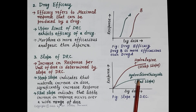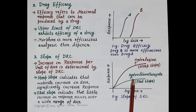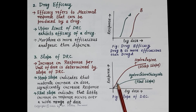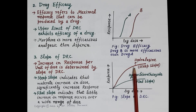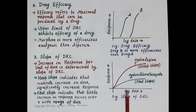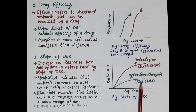Hydralazine and hydrochlorothiazide are antihypertensive drugs that reduce blood pressure, so the response here is the fall in blood pressure. The DRC of hydralazine shows a steep slope while hydrochlorothiazide shows a flat slope. A steep slope indicates that if the dose is increased moderately, there is a significant increase in response. A flat slope indicates that little increase in response occurs over a wide range of dose.